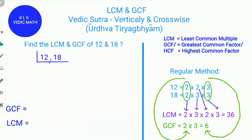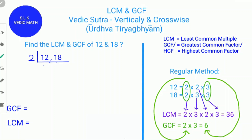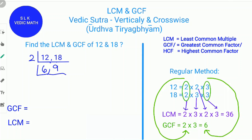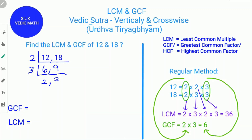Now let's find the GCF and LCM of 12 and 18. First, what common factor multiplies into 12 and 18? That's 2. 2 times 6 is 12, and 2 times 9 is 18. Next, we find the common factor for 6 and 9, which is 3.